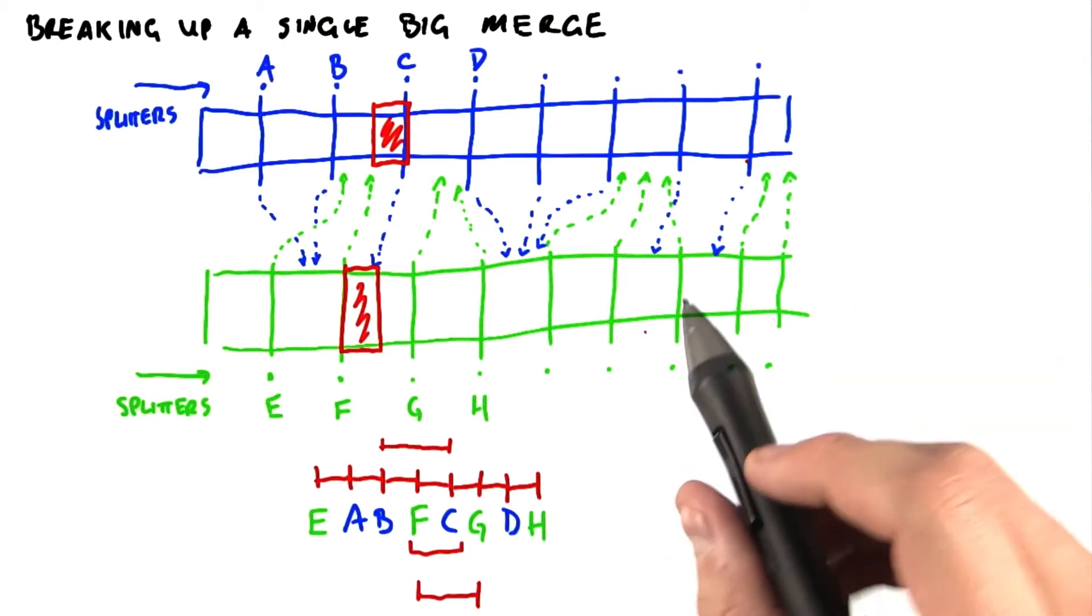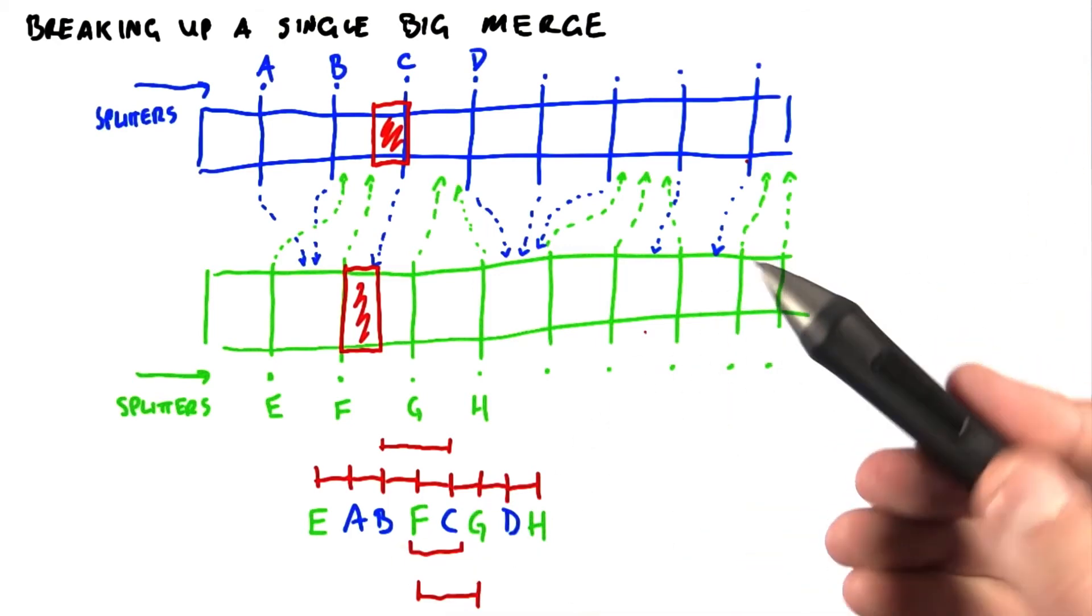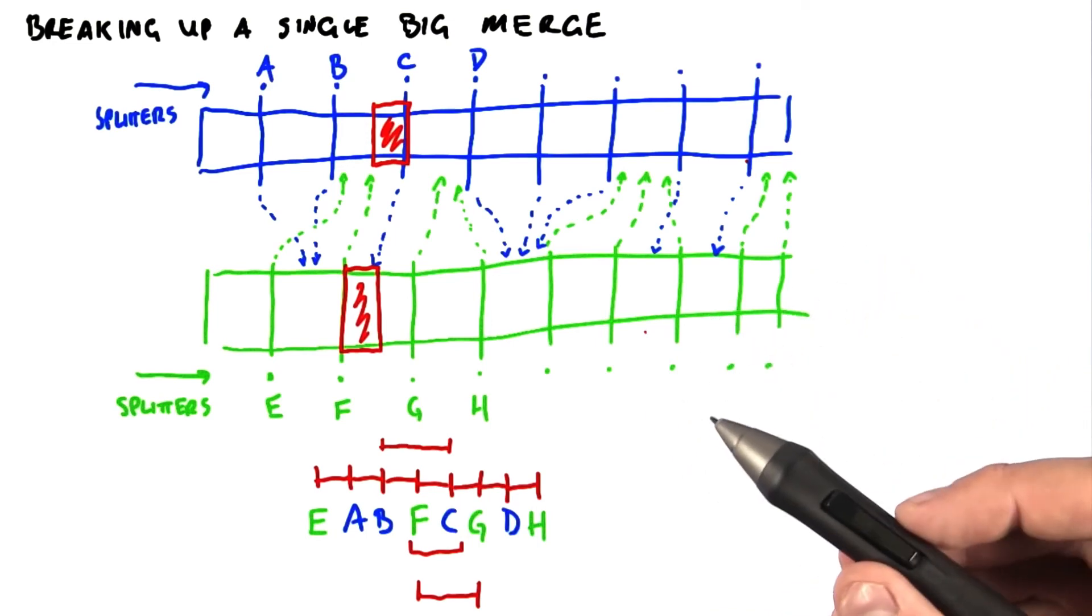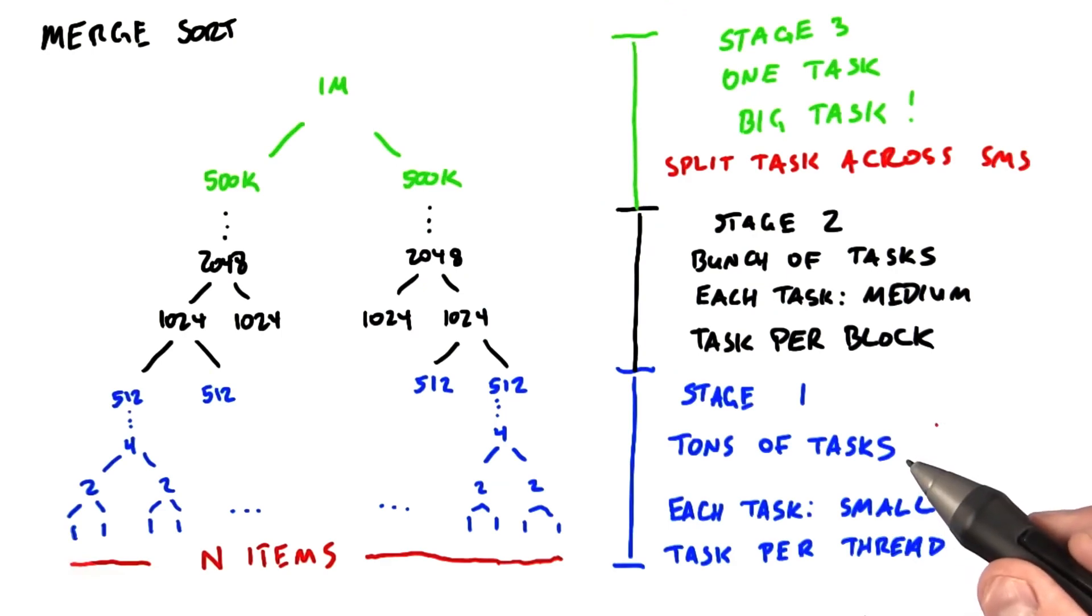So the challenge we've addressed here, we take one big problem and divide it into a large number of small problems, each of which can be processed in parallel.